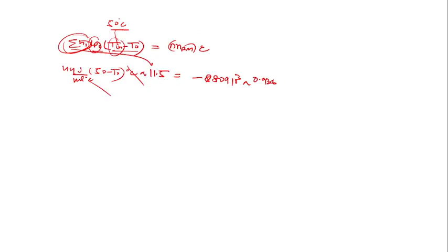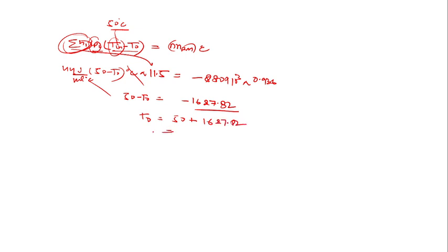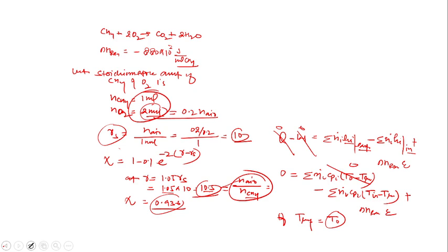Substituting: (50 − T₀) = −880×1000×0.936 / (11.5 × 44) = −1627.82. Therefore T₀ = 50 + 1627.82 = 1677.82°C, which rounds to 1678°C. This is the exit temperature of the flue gas.